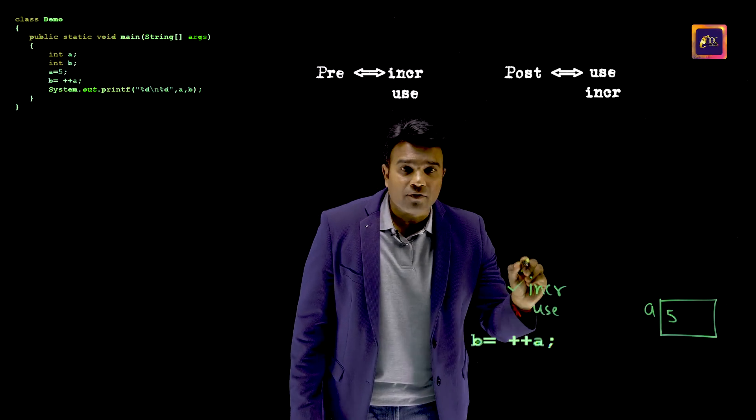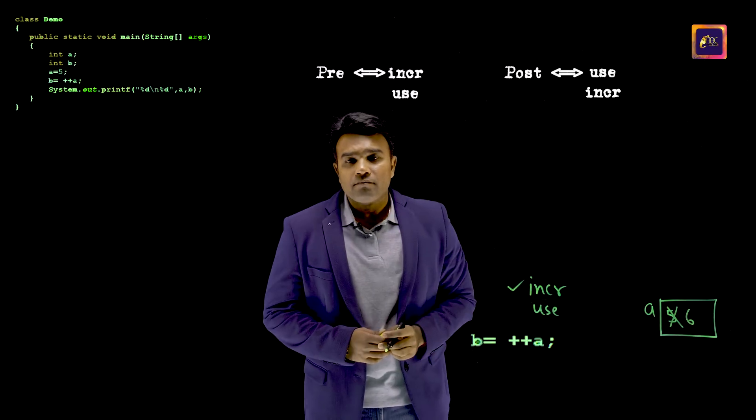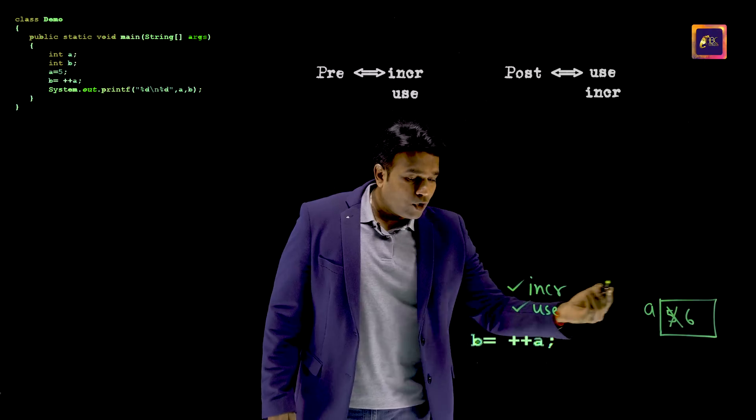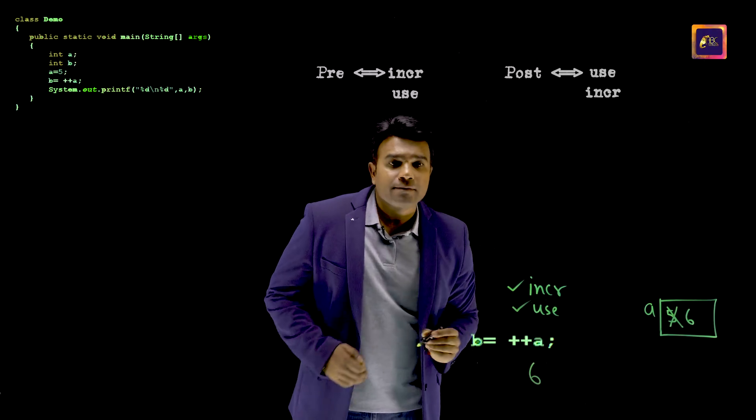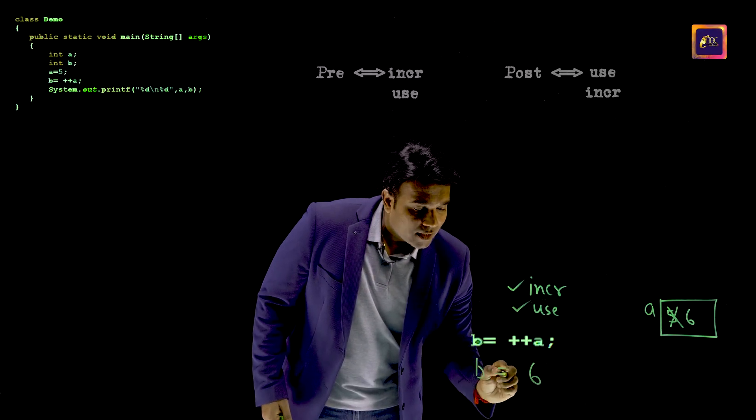Hence, I'm going to increment. Use is the second operation. So I'm going to use that value 6. And obviously, B gets that value 6.